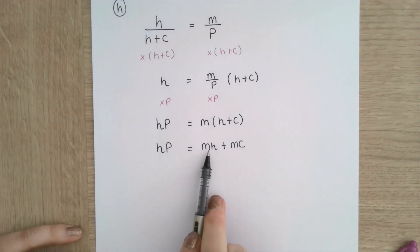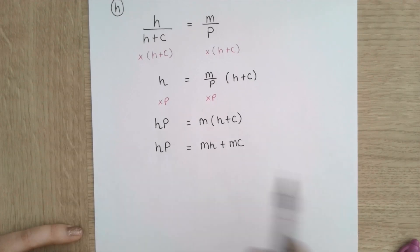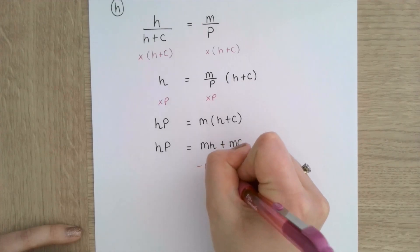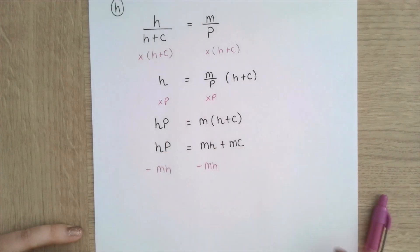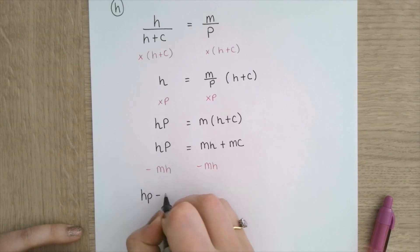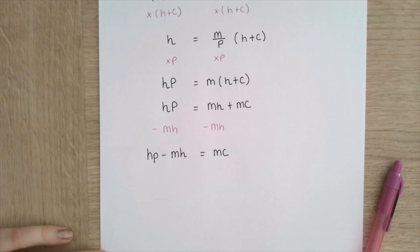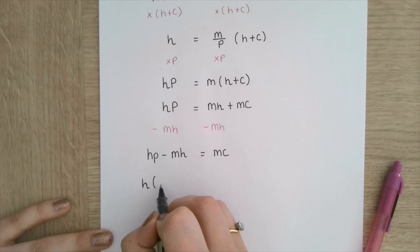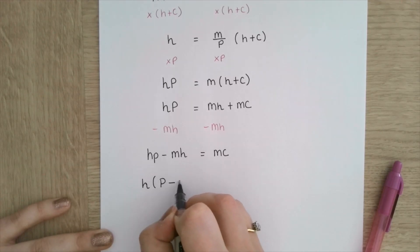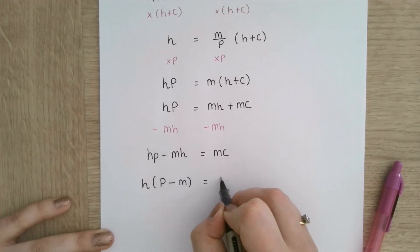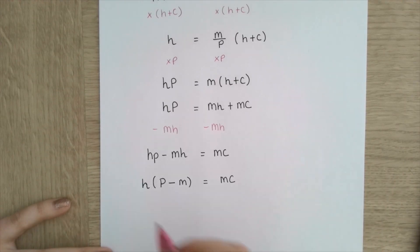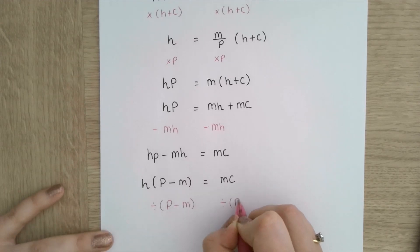I want to rearrange to make all of my h's on the same side, so I'm going to subtract mh from both sides. So I get hp minus mh is equal to mc. h is in both of these terms so I can factorize it: h brackets p minus m is equal to mc.